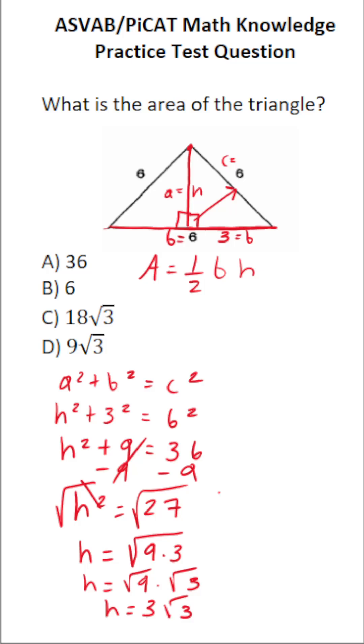So in other words, the height of our triangle is now three square root three. And we found that using the Pythagorean theorem. Now we can find the area of the triangle. It's one half. Its base, as I mentioned, is six times its height, which is three radical three.